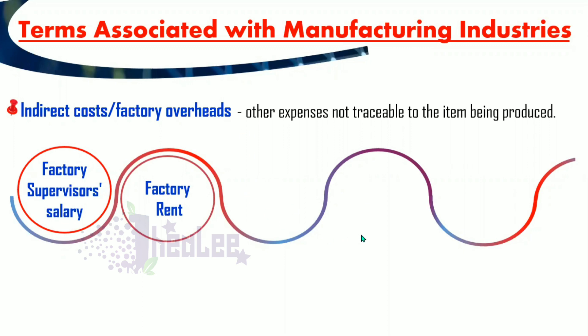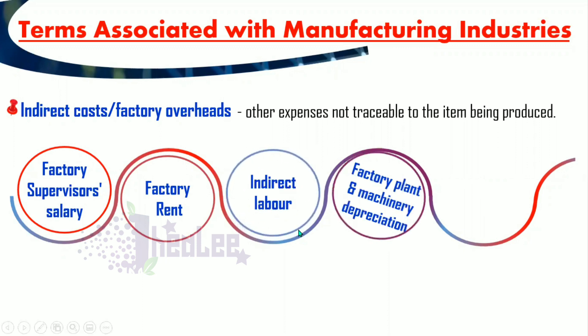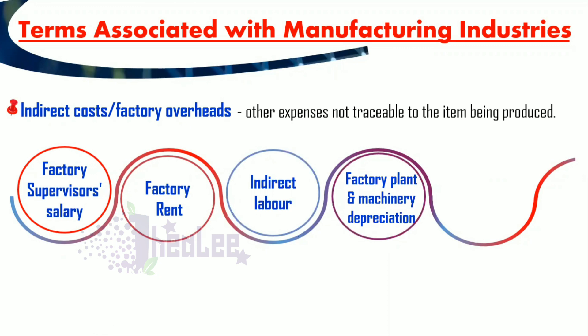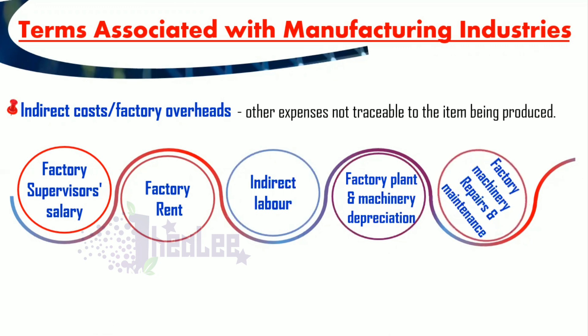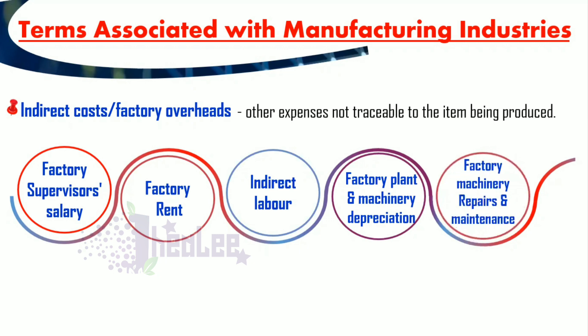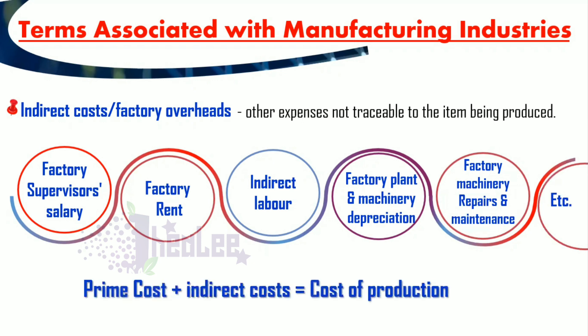If you see indirect salaries or factory salaries, that is an overhead. But if it is wages, that is a direct cost. Other examples of indirect costs include indirect labor, factory machinery depreciation or factory plant depreciation, and factory machinery repairs and maintenance. When you add your indirect costs to your prime costs, you get what is called cost of production. So prime costs plus indirect costs (your overheads) equals cost of production.